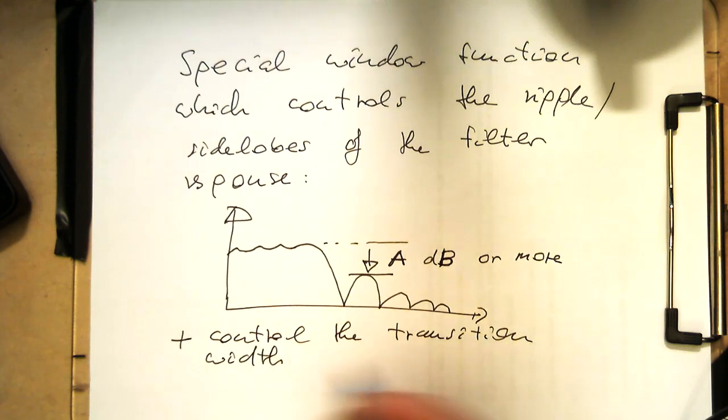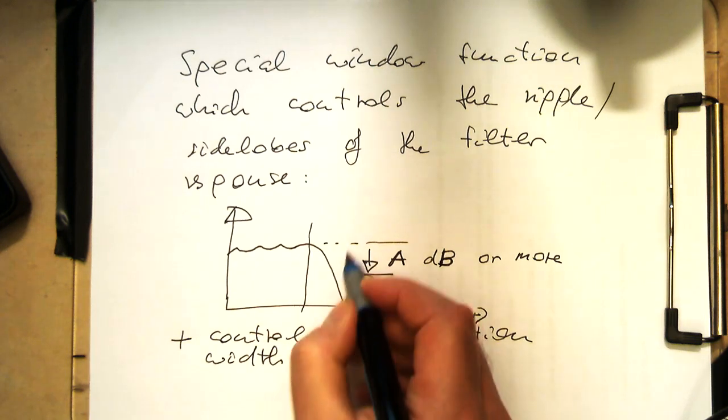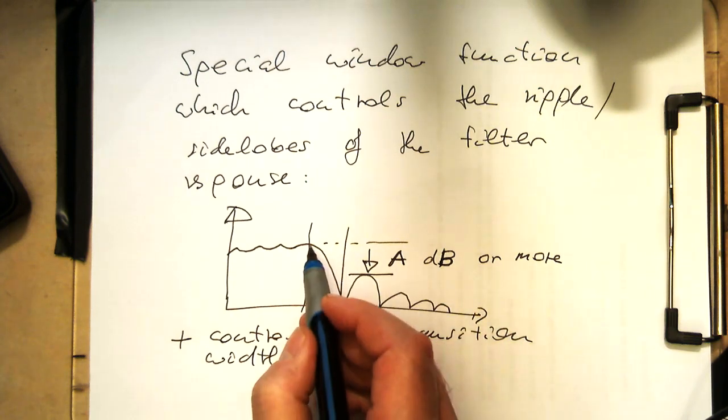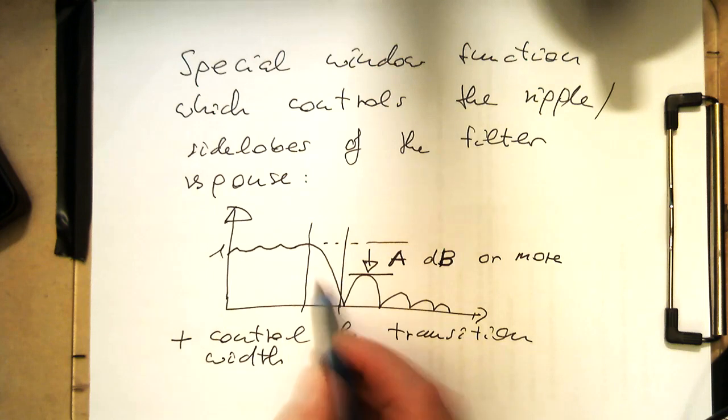Transition widths means this goes from one, essentially from the one response to zero, to the damping here.